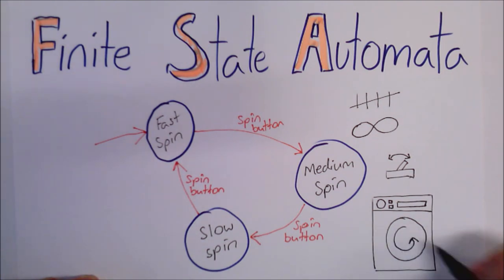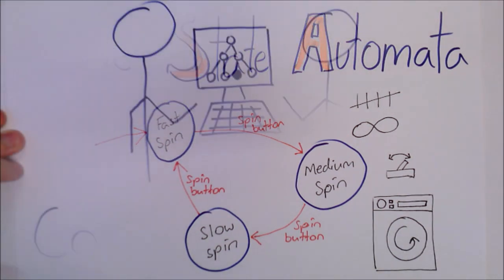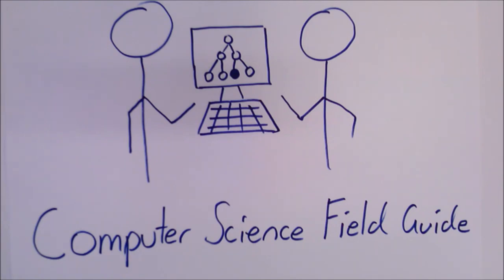Therefore, a Finite State Automaton is a simple machine with a finite number of states.